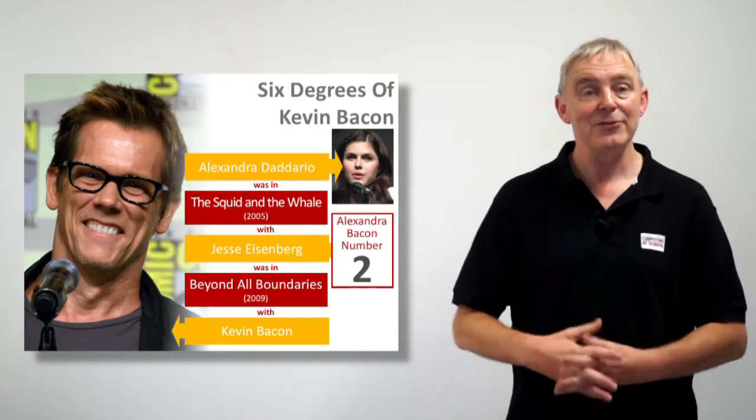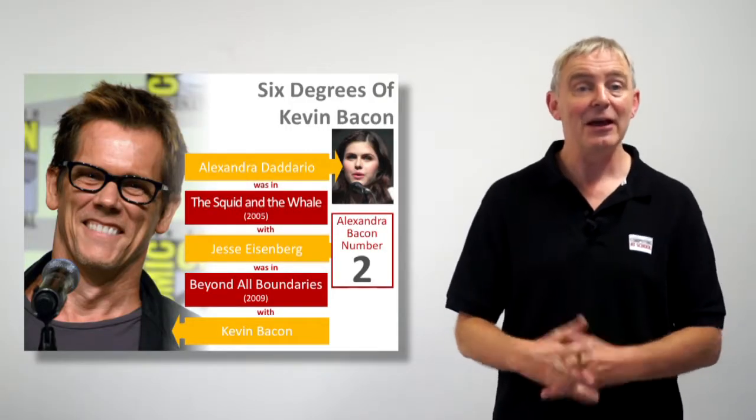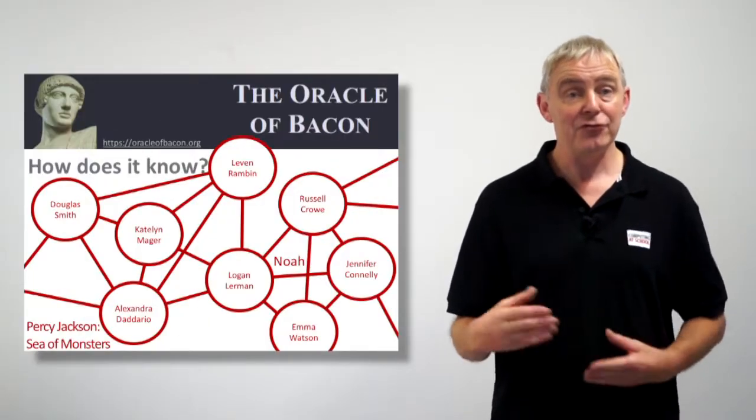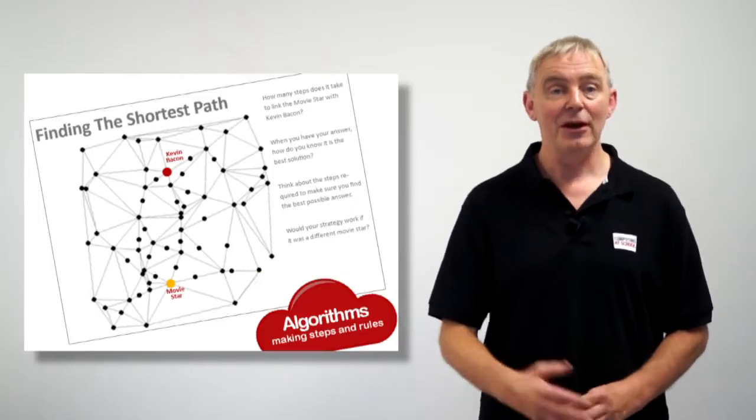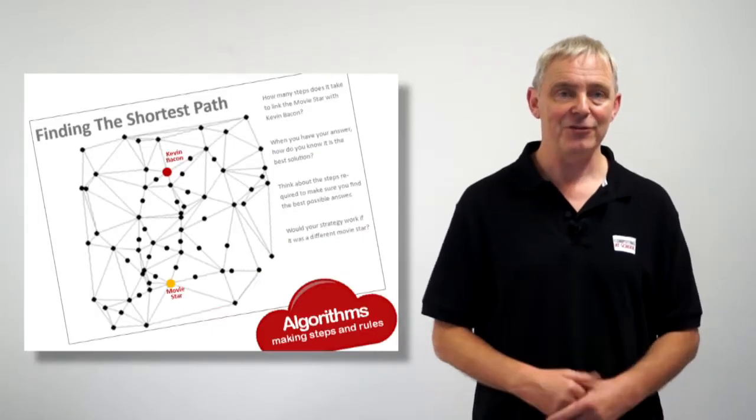These sorts of things are extended into 'The Oracle of Bacon', a fun activity in which we begin to investigate finding the shortest path across a graph structure. And finally, in the final session, 'The Beauty of Trees', we begin to explore some of the exciting properties of binary trees.